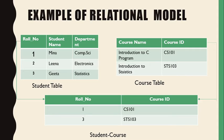The relationship between the student table and the course table is represented in the student-course table. In the student table, columns include roll number, student name, and department — all with unique names, so roll number one is not repeated. The course table has course name and course ID. The student-course table represents the relation, for example that roll number one has course ID CS101.